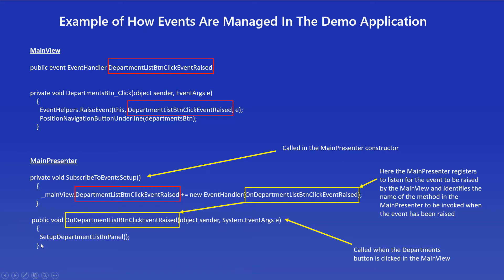So when the event is raised, the method On Department List Button Click Event Raised is run, and I'm calling another method called Setup Department List In Panel along with other operations. The main thing is that we know when to run this code, and the trigger is when this event is raised.